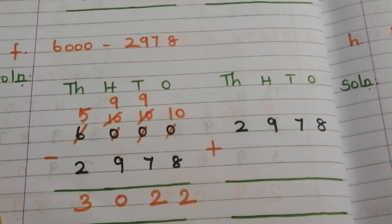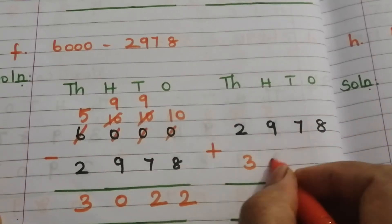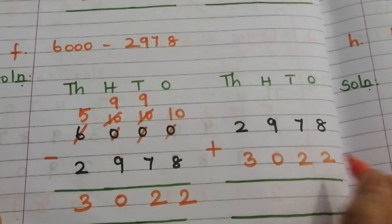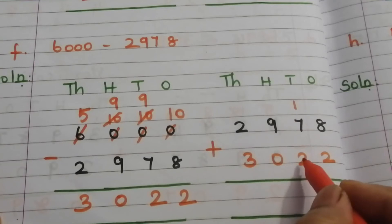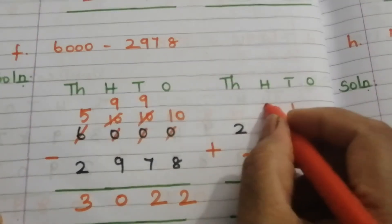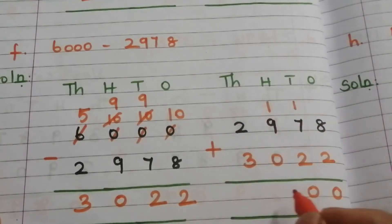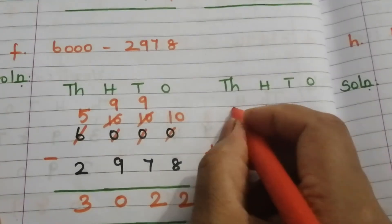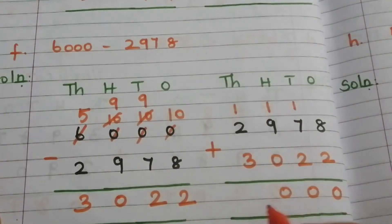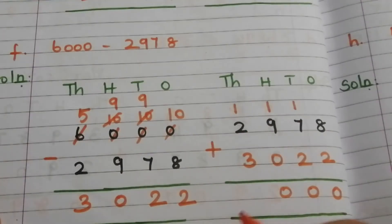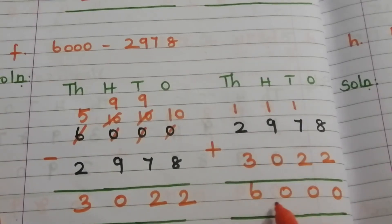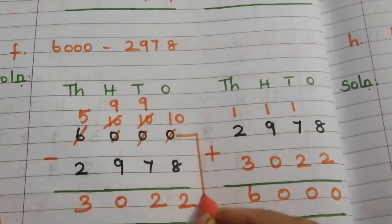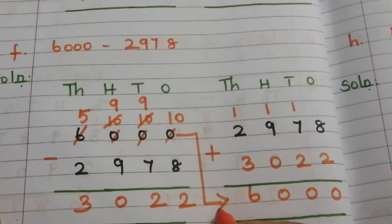We have to add this answer to the subtrahend 2978. Adding 3022: 8 plus 2 is 10 — write 0, carry 1. 7 plus 2 is 9, plus 1 is 10 — write 0, carry 1. 9 plus 1 is 10 — write 0, carry 1. 3 plus 2 is 5, plus 1 is 6. Our sum is equivalent to the minuend, so our subtraction is correct.